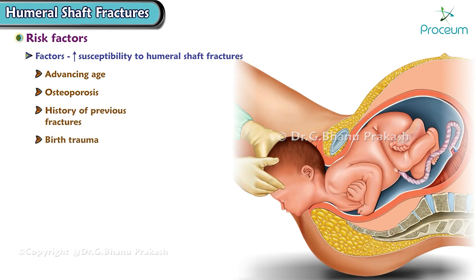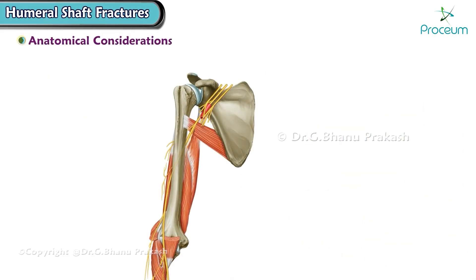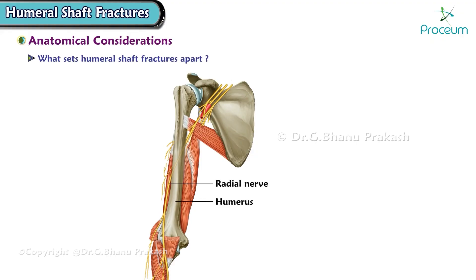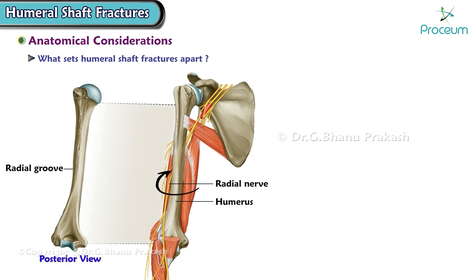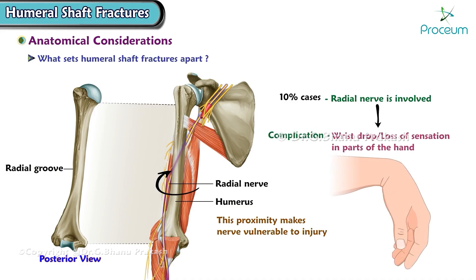Humeral shaft fractures are the second most common fractures seen in cases of birth trauma, making them a significant concern in neonatal care. What sets humeral shaft fractures apart is the course of the radial nerve along the humerus and the area of the radial-bicipital groove. This proximity makes the nerve vulnerable to injury, and in approximately 10% of cases, the radial nerve is involved, leading to potential complications like wrist drop or loss of sensation in parts of the hand.